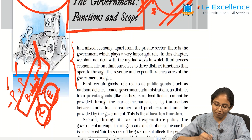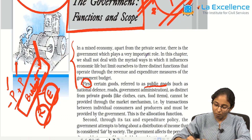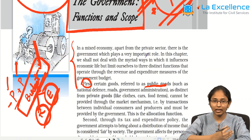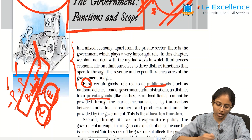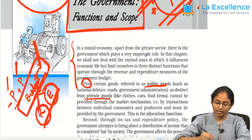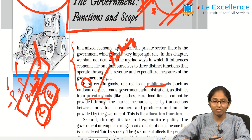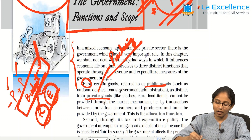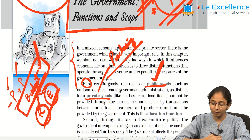First of all, there are certain goods called public goods, which means anyone can access those goods without any payment. Then there are other goods known as private goods, which can be accessed if you have the purchasing power. Public goods and public services can be accessed by anyone.